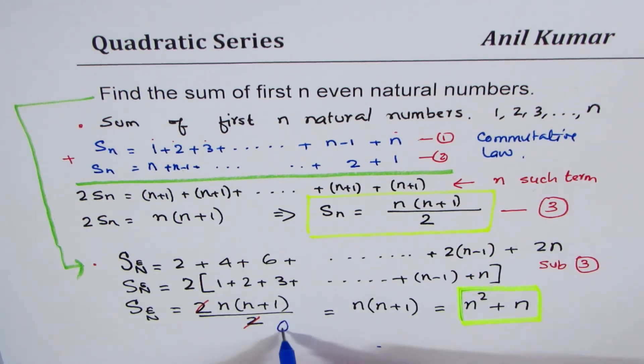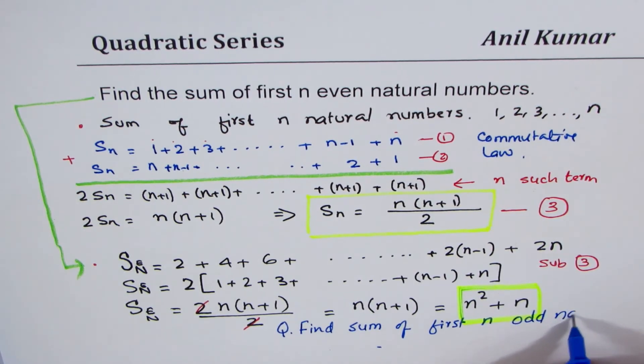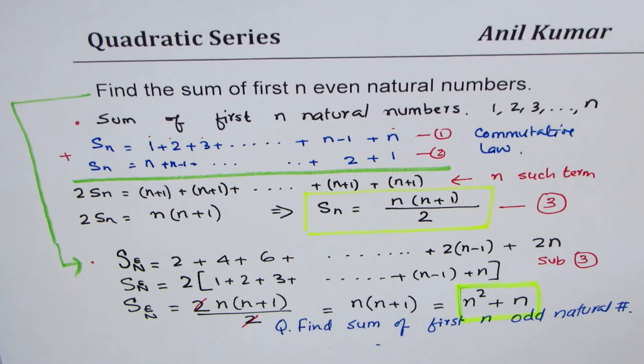Now, here is a question for you. Obviously, find sum of first n odd natural numbers. Odd natural numbers. So, that becomes a question for you. Instead of even, you have to now do with odd natural numbers. Figure that out. What answer do you get? You can write in my comments. And then, if there are any questions, I am there to solve and help you out.